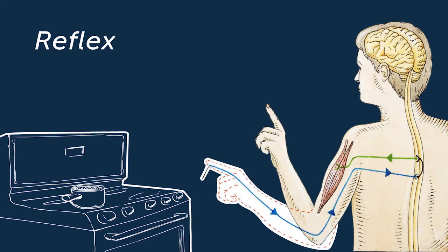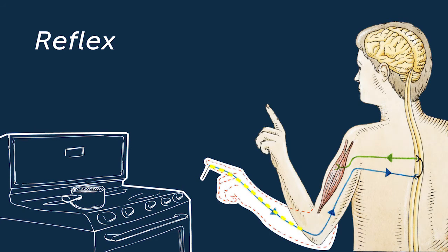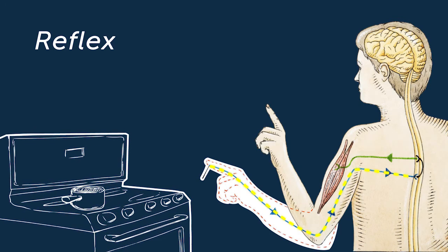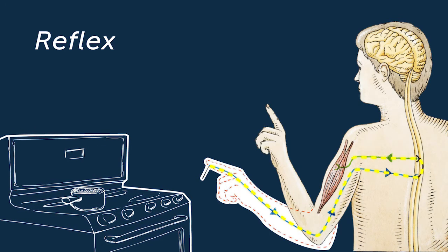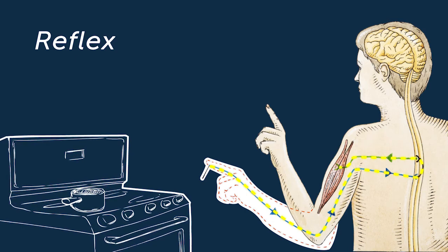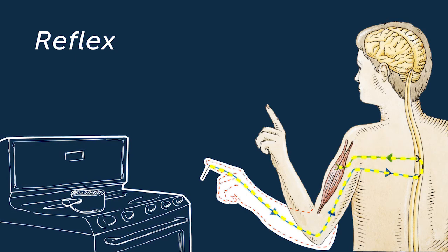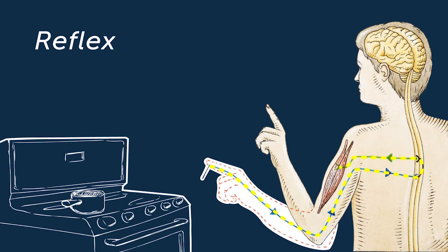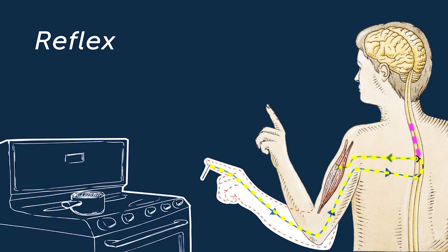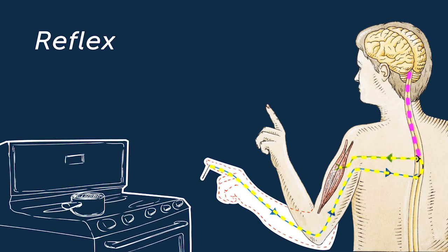In a reflex arc, a signal from your hand travels to your spinal cord. In response, a nerve impulse is sent back to your hand, causing you to pull your hand away. At the same time, the information about your hand and the painful object is sent to your brain.